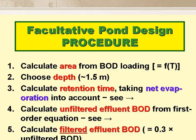This is the procedure we follow when designing a facultative pond. First, we calculate the area from the equation for lambda s, which is, as we've just seen, a function of the design temperature. Second, we choose a depth, and this is usually 1.5 metres. Next, we calculate the retention time, taking net evaporation into account, and I'll come to this in a moment.